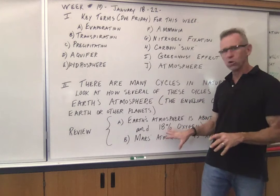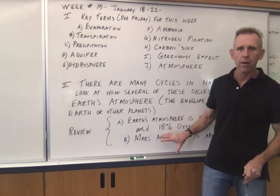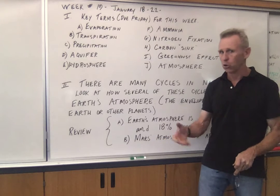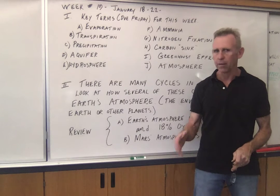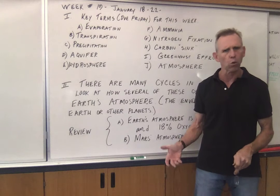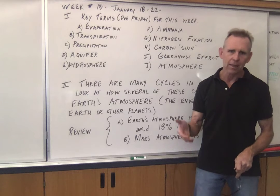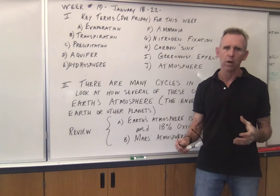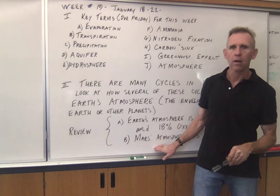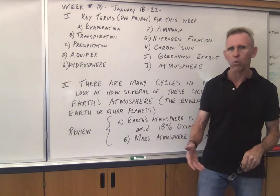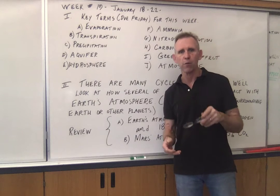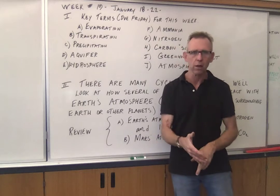Quick review: Earth's atmosphere is about 78% nitrogen. I'm reviewing that because when we talk about the nitrogen cycle, there's a special thing about bacteria to mention. Mars' atmosphere is about 95% carbon dioxide. Students sometimes ask: if it's 95% carbon dioxide — a global warming gas — why isn't Mars really warm? The answer is it has a very thin atmosphere. It does have windstorms and weather, but it's not enough to retain heat. The warmest day on Mars is about the coldest day here on Earth in Antarctica. That's why Mark Watney in The Martian used a radioactive isotope for heat and used bacteria to grow potato plants on Mars.